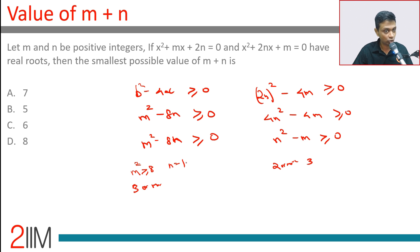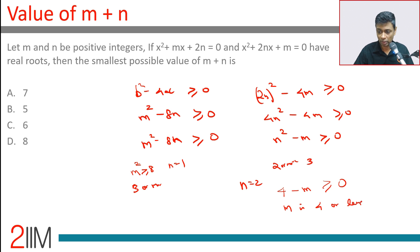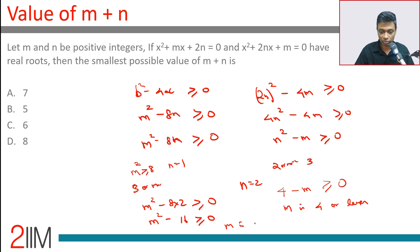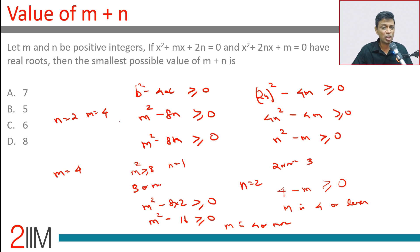Put n equal to 2. Then n² = 4, so 4 - m ≥ 0 means m ≤ 4. Also m² - 8×2 ≥ 0 gives m² - 16 ≥ 0, so m ≥ 4. Therefore m must equal 4. With n = 2 and m = 4, both conditions become exactly 0 — the equations have real (equal) roots, and it works.